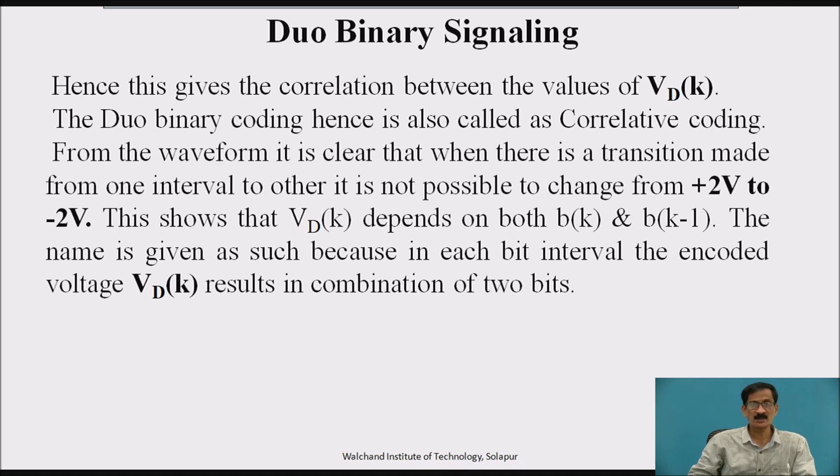From the waveform, it is clear that when there is a transition made from one interval to other, it is not possible to change from plus 2 volt to minus 2 volt. This shows that v d k depends on both b k and b k minus 1. The name is given as such because in each bit interval, the encoded voltage v d k results in combination of 2 bits.